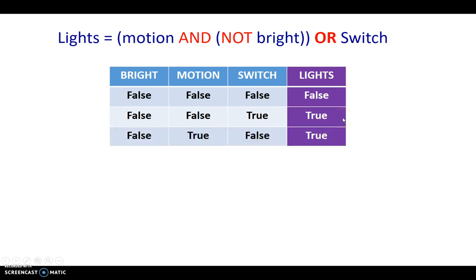Now, here it is. It's dark outside, meaning it's not bright, but there's motion. So if it's not bright and there's motion, we need to have the lights turned on, even if the manual switch was off. So these lights are turned on because there was movement, and it was not bright outside.